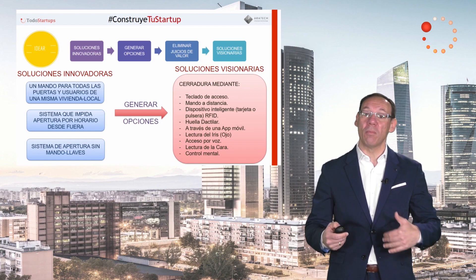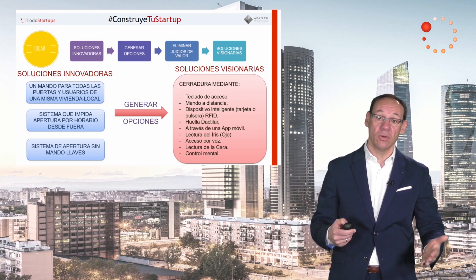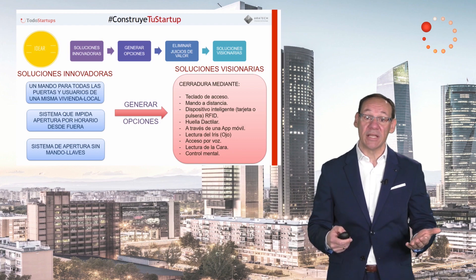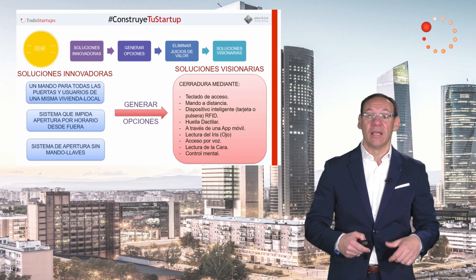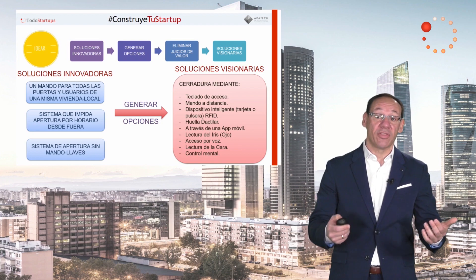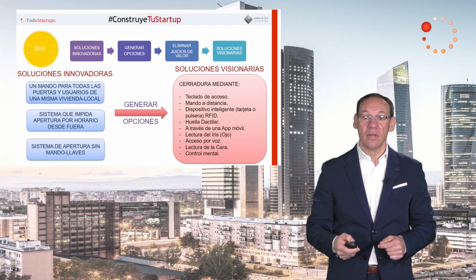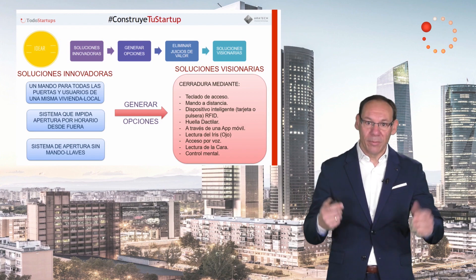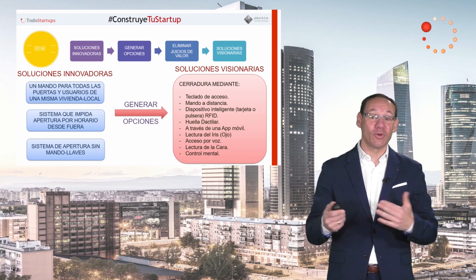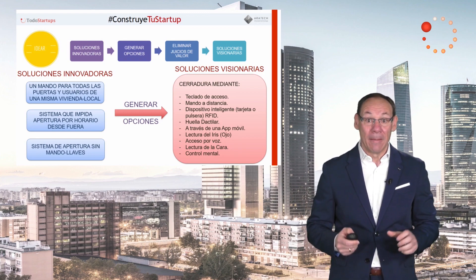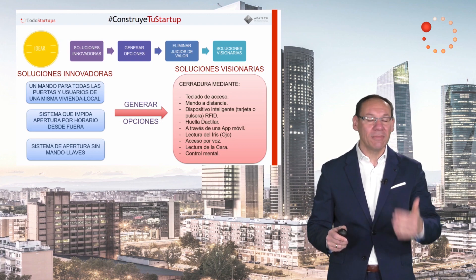Como resultado, obtenemos diferentes soluciones con más o menos visión de futuro: desarrollar cerraduras con acceso mediante teclado, mando a distancia, dispositivo inteligente — ya sea tarjeta o pulsera con chip incorporado para lectura por contacto —, lectura de huella dactilar, a través de una aplicación instalada en nuestro móvil, lectura del iris o del globo ocular, acceso mediante voz, lectura biométrica de la cara, o por control mental enviando una orden desde nuestro cerebro. Como vemos, algunas soluciones son más conocidas y otras nos pueden sonar a ciencia ficción, pero precisamente se trata de eso en esta etapa: no filtrar y aportar la mayor cantidad posible de opciones.